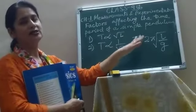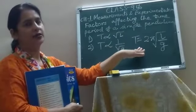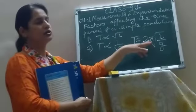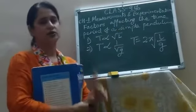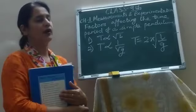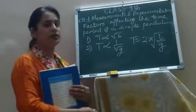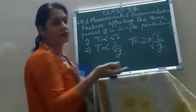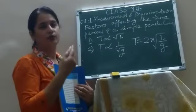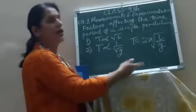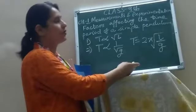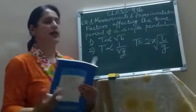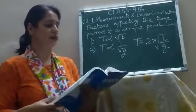It is clear that the time period depends only on two factors: the effective length of the simple pendulum and the acceleration due to gravity. The formula which combines these factors is T = 2π√(L/G). Whenever you have to find the time period of the simple pendulum, you will use this formula. Pi is a constant with value 22/7 or 3.14, L is the effective length of the pendulum, and G is the acceleration due to gravity.